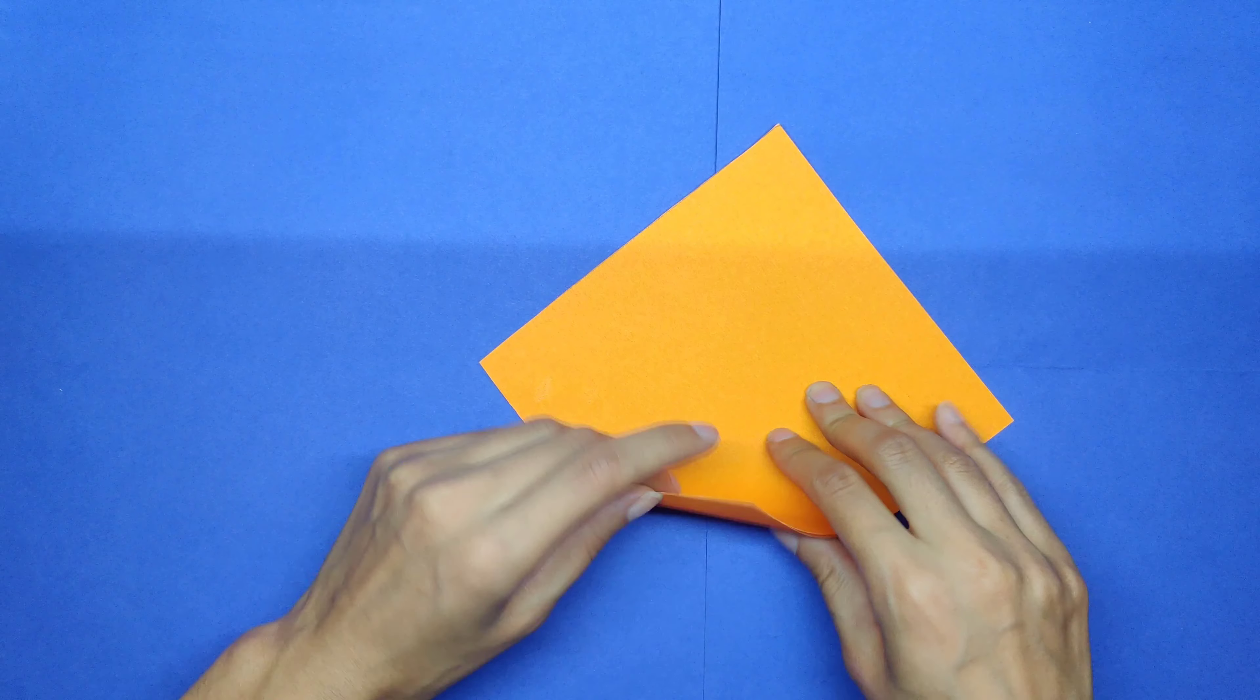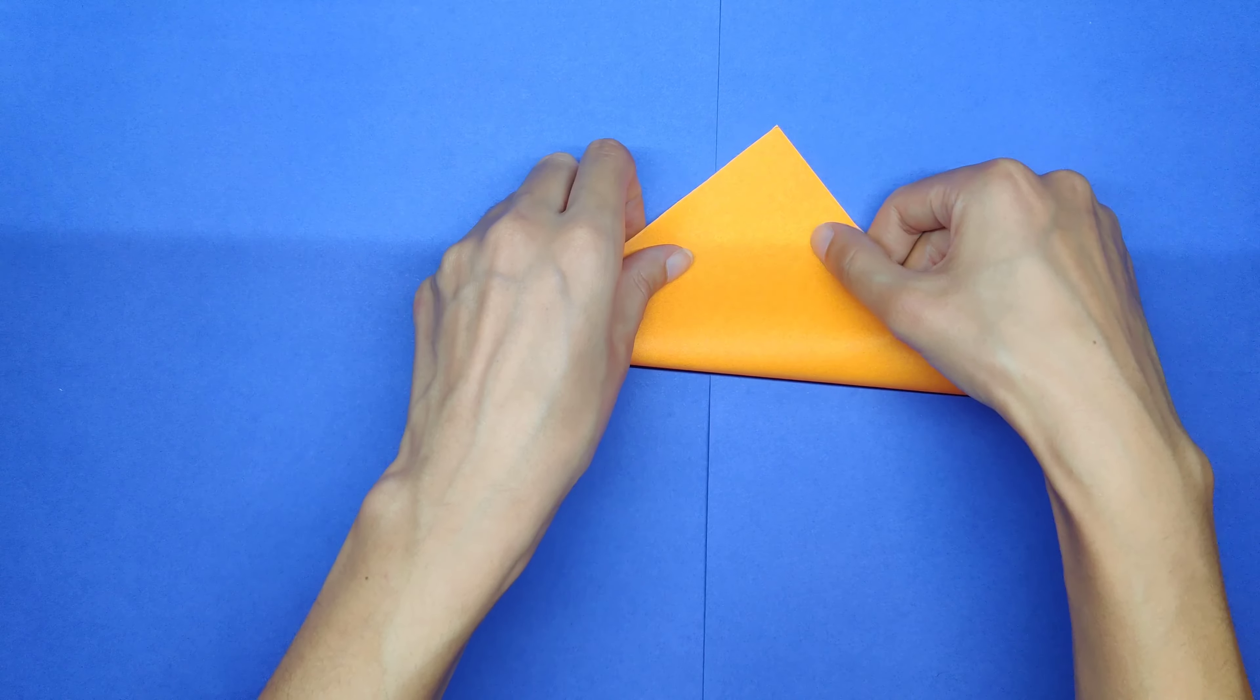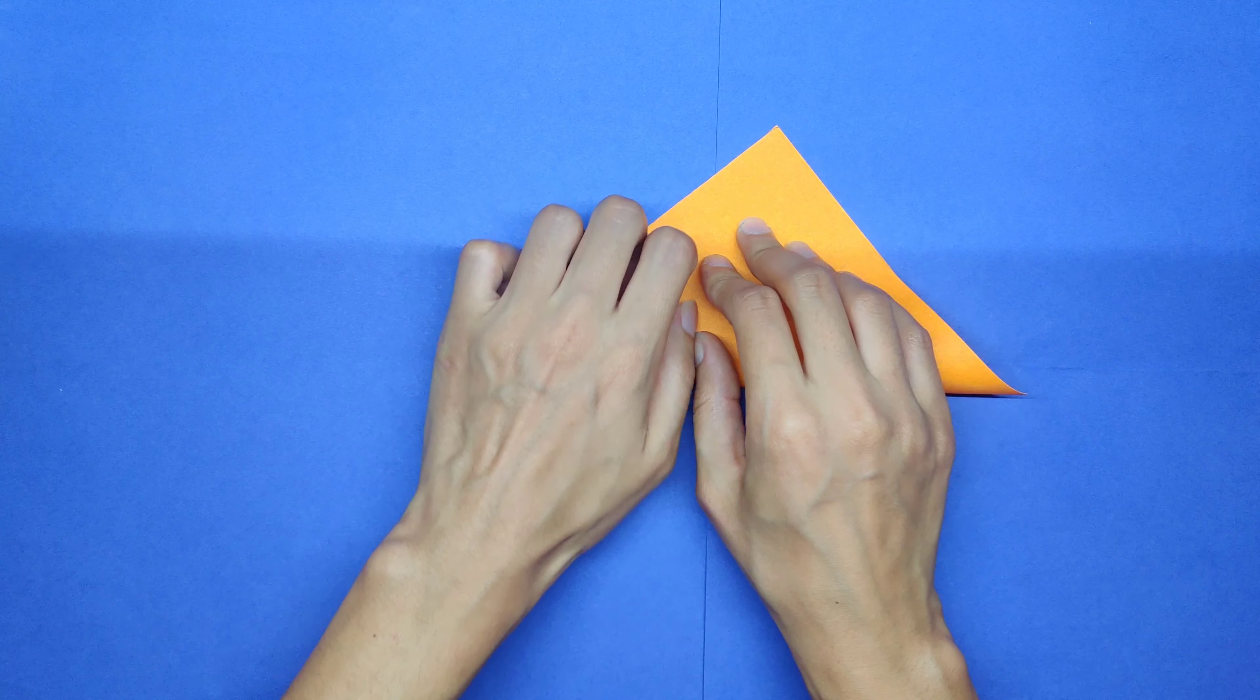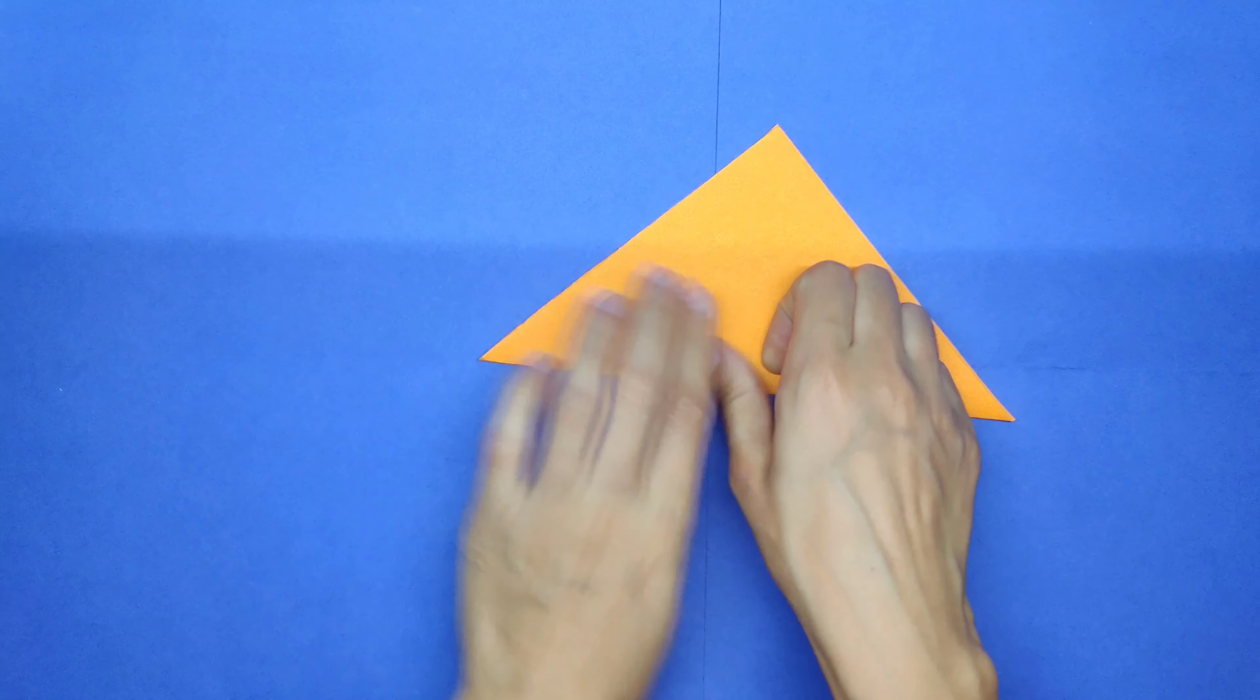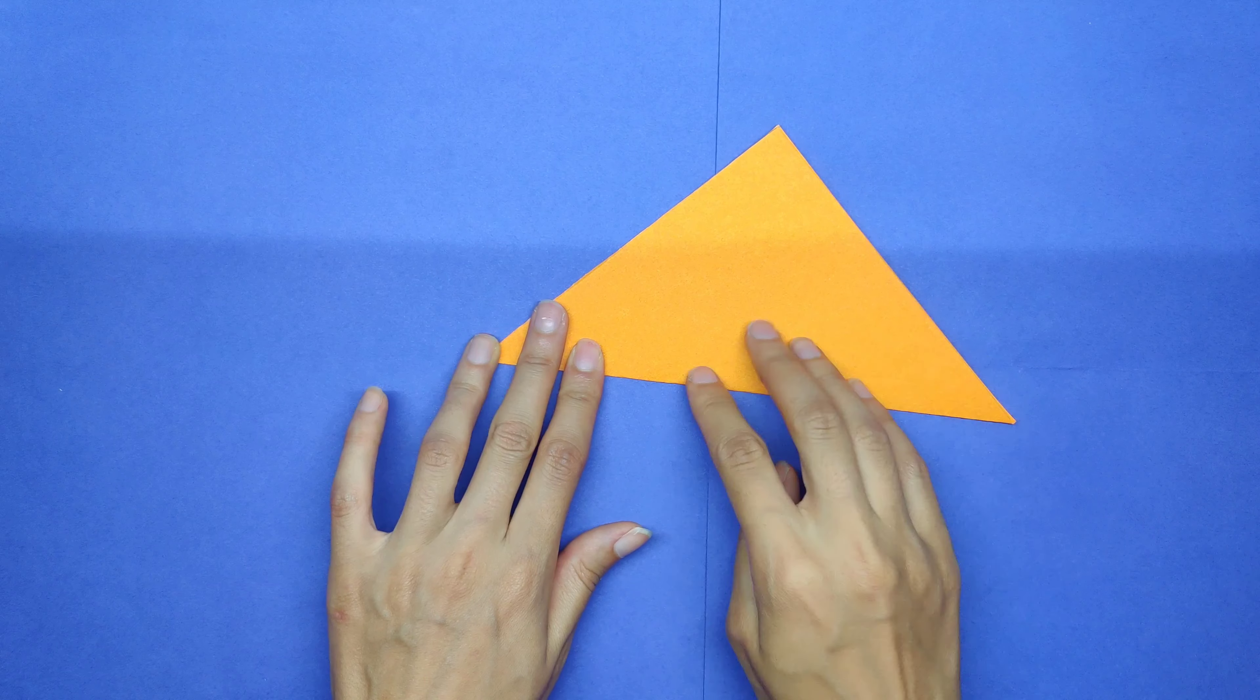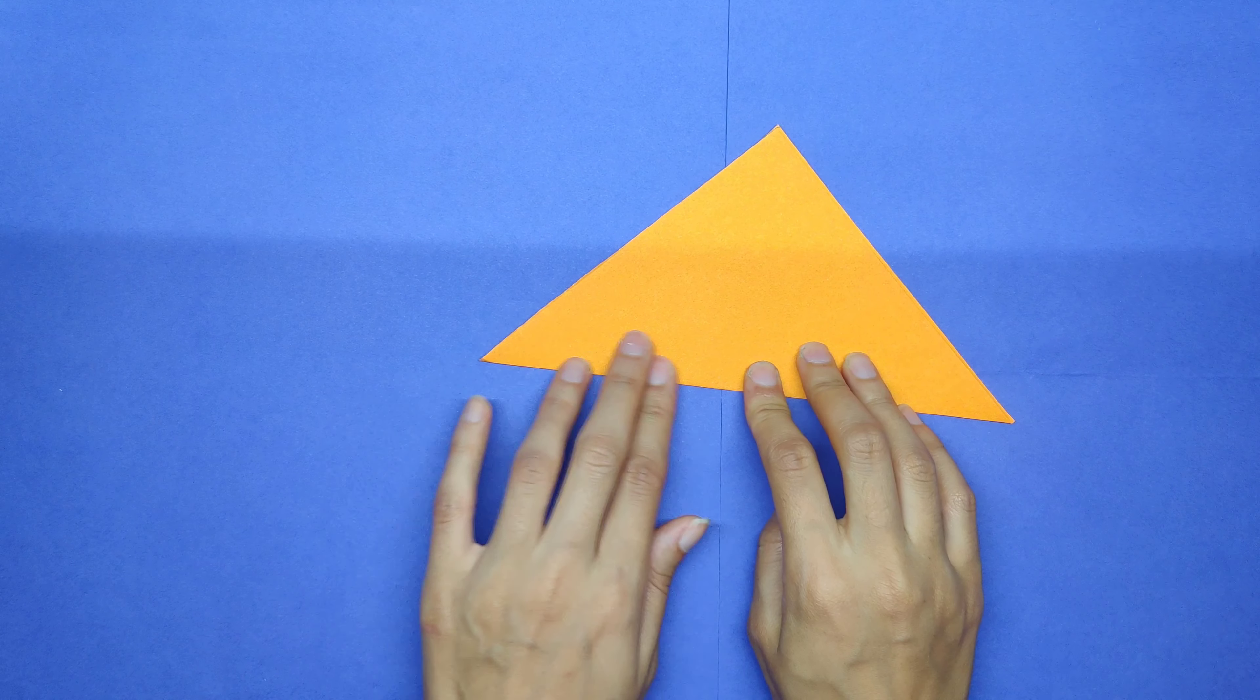Once you got the diamond, then you're going to fold, start folding your paper to get a triangle from a diamond. You're going to turn it into a triangle.